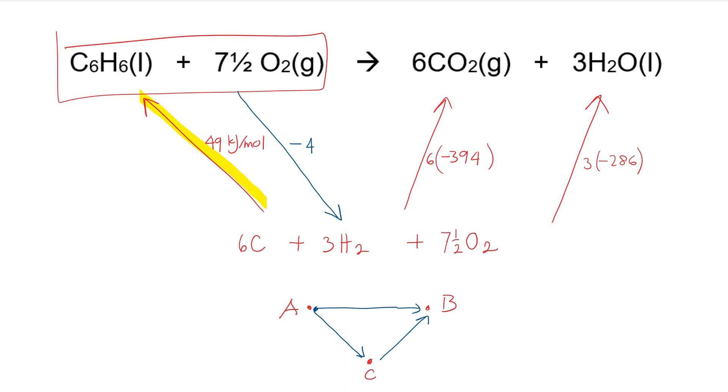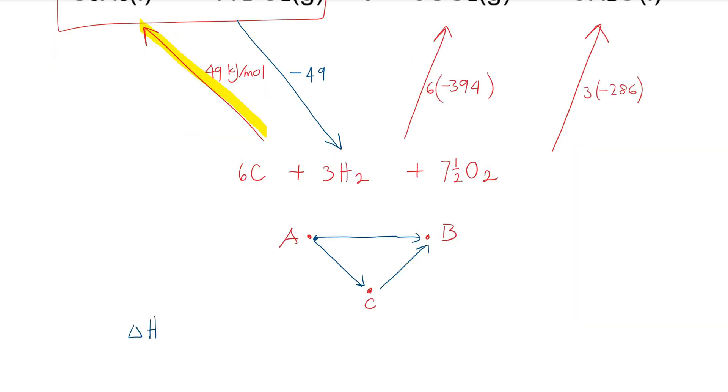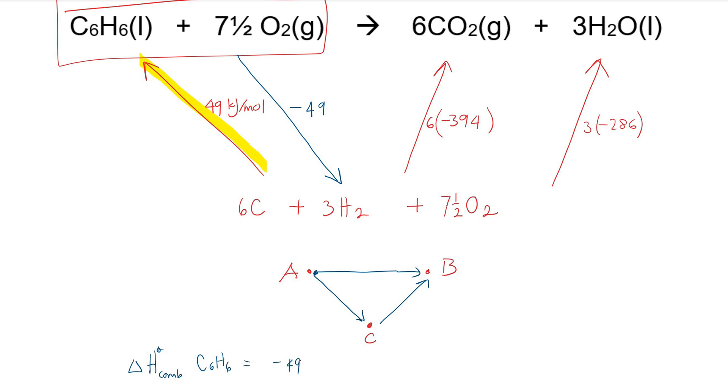Now we have negative 49 kilojoules per mole. So the enthalpy change of combustion of benzene is just negative 49 plus 6 times negative 394 plus 3 times negative 287. And that's exactly the same as what we did before.